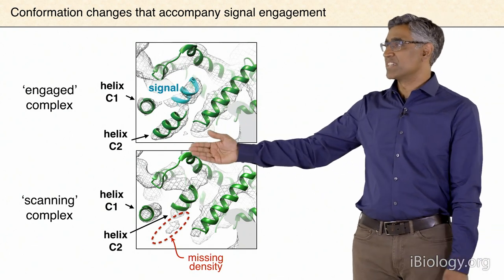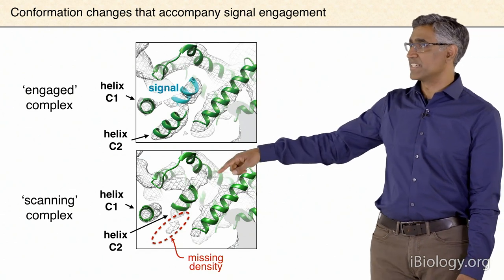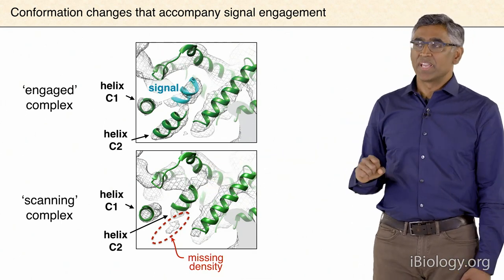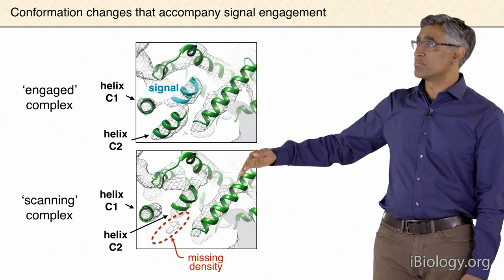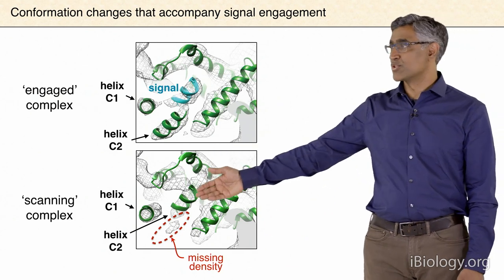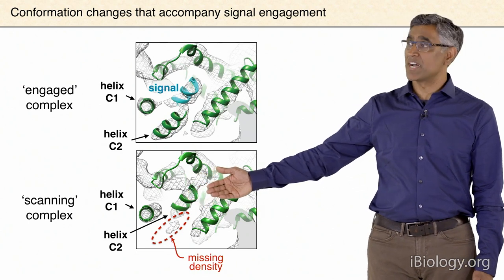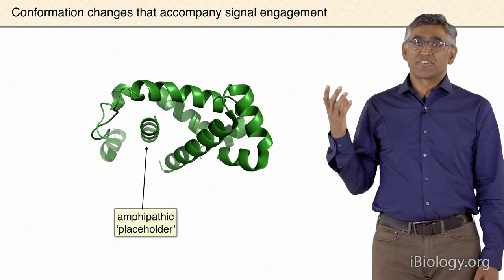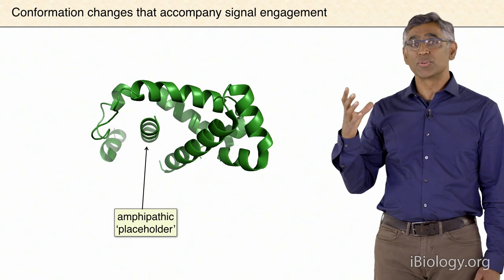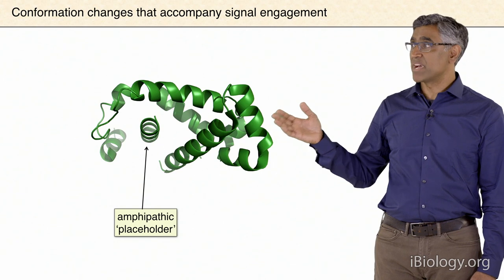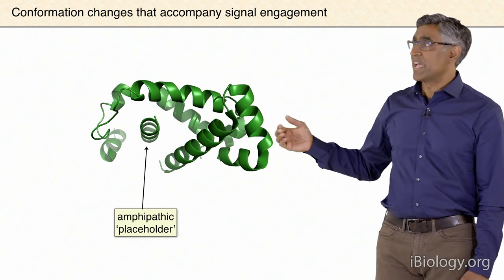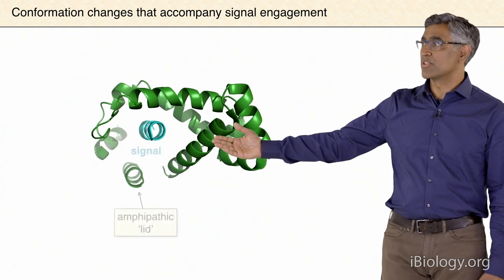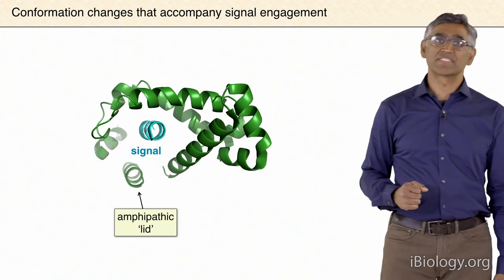What does this structure look like before the signal is engaged? In the state where the signal is bound, there's the signal and the two helices C1 and C2 forming a lid over it. When you look at the other complex—where the signal is still inside the ribosome—what was initially expected to disappear is the density for the signal. But in fact, the density that's missing is where helix C2 used to be. We realized what must have happened: when the central hydrophobic cavity of this claw is unoccupied, the amphipathic helix C2 simply moves in and occupies that cavity.